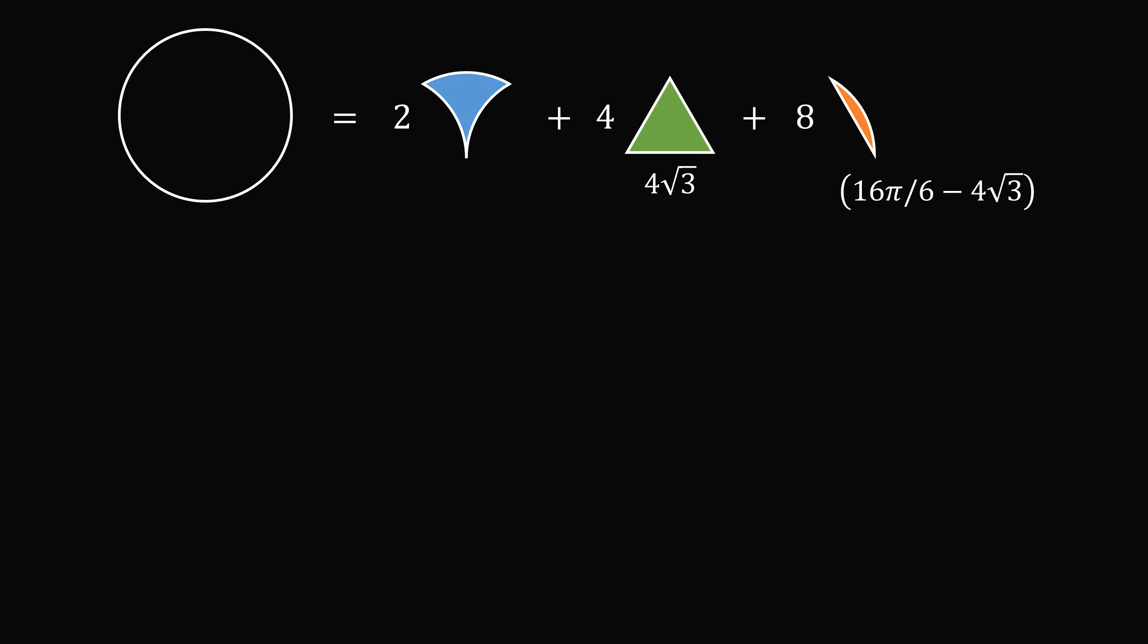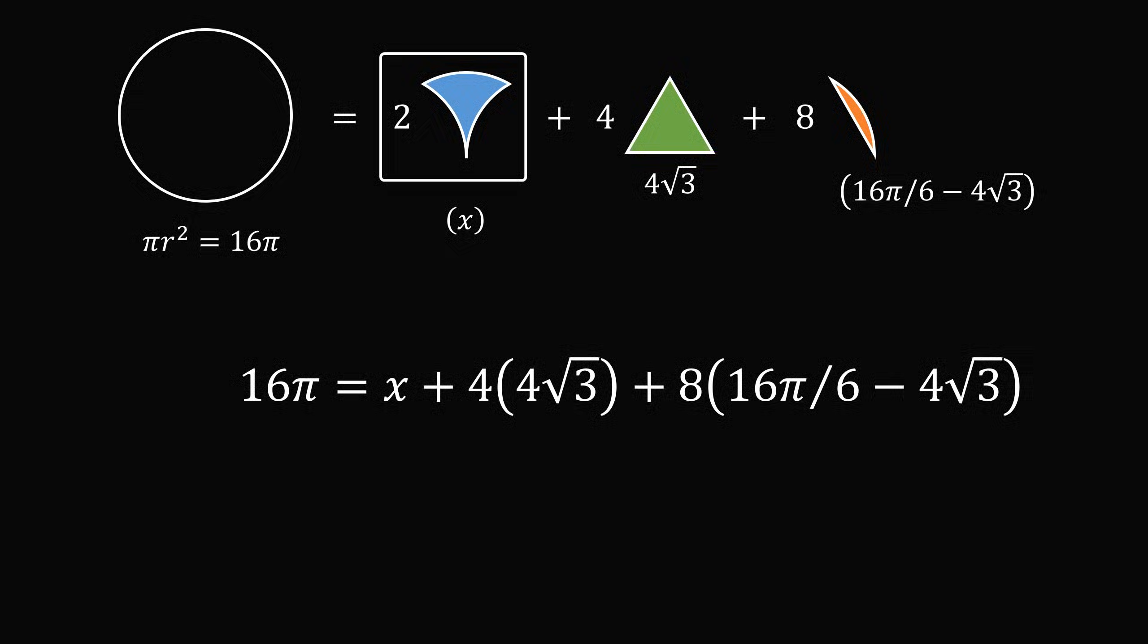We finally calculate the area of circle B. This is equal to pi r squared, which is equal to 16 pi. Now we want to calculate two of these blue regions, and let's just label that as x. So we now have an equation 16 pi is equal to x plus 4 multiplied by 4 times the square root of 3, plus 8 multiplied by the area of a circular segment, where each segment is equal to 16 pi over 6 minus 4 times the square root of 3.